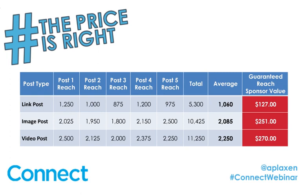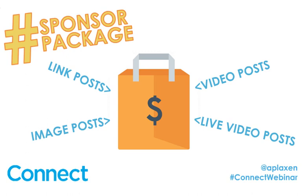Adding the boosted cost plus the sponsor value together: you'd charge $127 for a link post or $251 for an image post. But you don't want to sell one-off posts — that's a very hard sell. You want to create sponsor packages that include multiple link posts, image posts, video posts, and also Facebook Live posts. For example, for $2,000, you'd get three link posts, five image posts, and one video post. Add all of that together — that's the best way to create sponsor packages around posts.